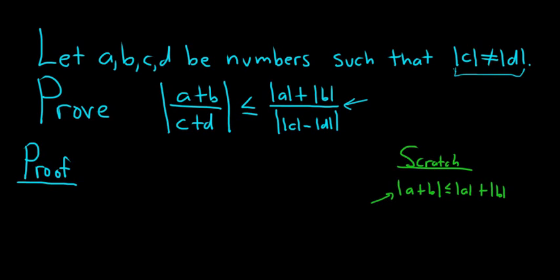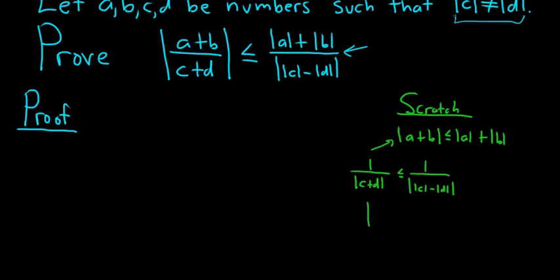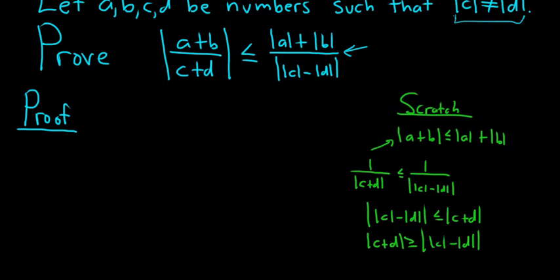The first denominator — if you ignore the A plus B — is really just: 1 over |C+D| less than or equal to 1 over ||C| − |D||. If you cross multiply, and you can without switching signs because everything is positive, you get ||C| − |D||. Reading it backwards, this is the reverse triangle inequality. So this problem is essentially a synthesis of the triangle inequality and the reverse triangle inequality.